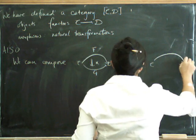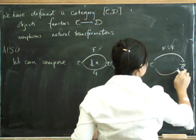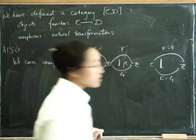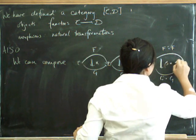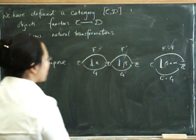Well, we can compose the functors along the top. So we get F prime composed with F. We can compose the functors along the bottom. So we get G prime composed with G. And so we expect something that lives in there. And we're going to call it beta star alpha to show it's different from beta round circle alpha.